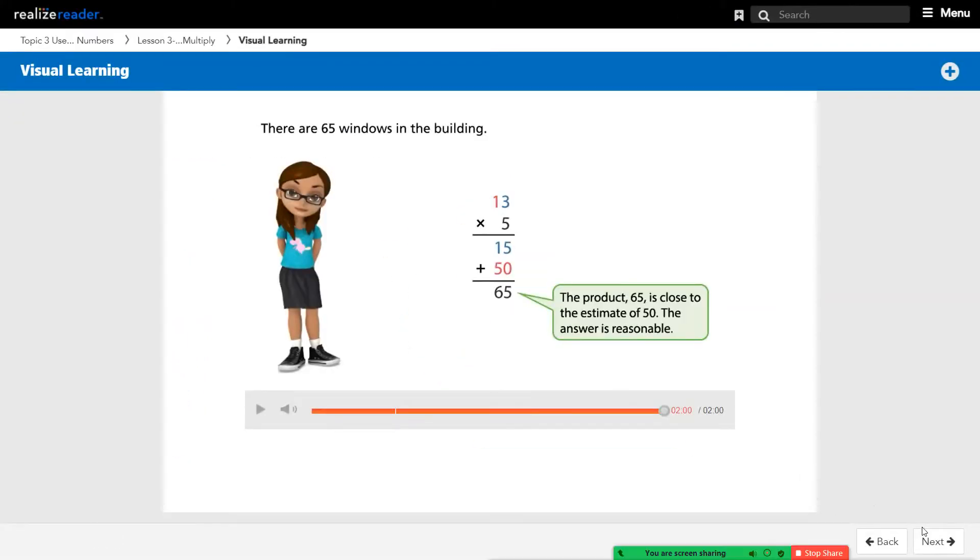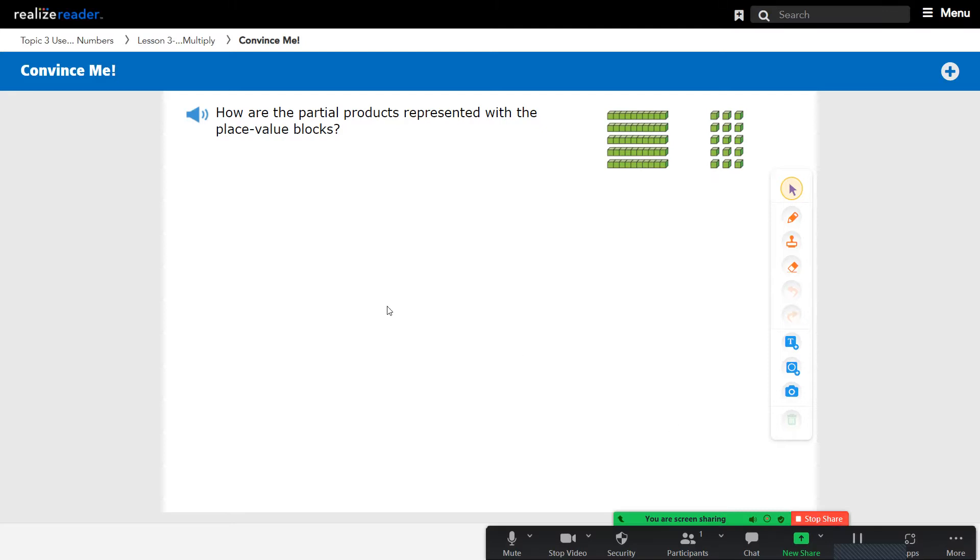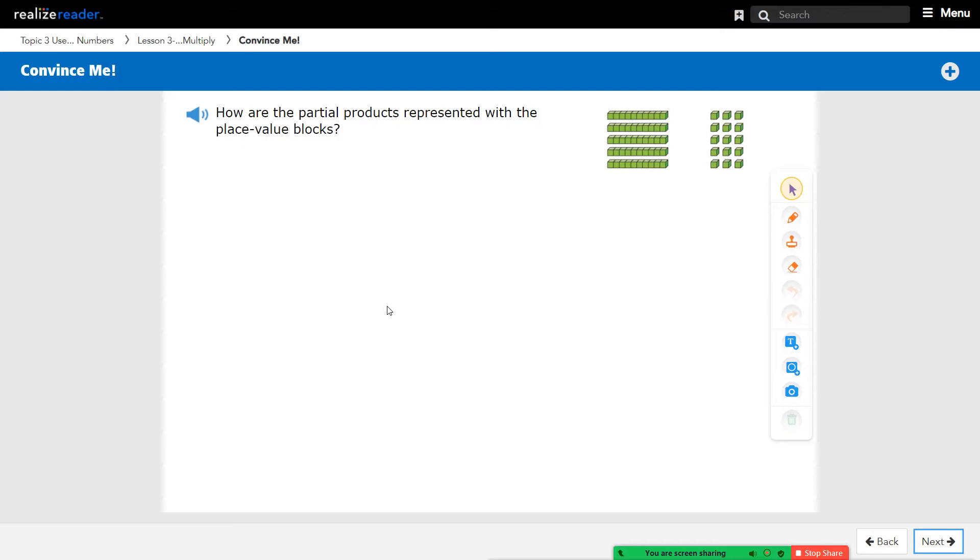Let's take a look at our notes before we jump into our guided practice. In our example question, it asks how are the partial products represented with the place value blocks? You see place value blocks with 13 in each row - one 10 rod and three ones in each row, and there's 5 rows. The partial products are represented by the 10 rods for the tens, and the other part of the product is represented by the ones. 5 times 10 gives you one partial product, and 5 times 3 gives you the other partial product.